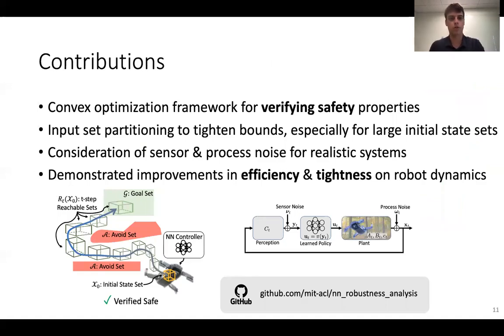So to wrap up, the contributions of this work are a new convex optimization-based framework using linear programming that allows you to verify the safety properties of neural network control systems. This is based on linear programming as well as using these new ideas from input set partitioning, which is really useful particularly when your initial state set is large. We also showed how you can consider sensor and process noise in the analysis, and we showed how this improves your efficiency and tightness on different problems in robot dynamics. I'd be excited to hear from anyone with questions, as well as I'd like to point you to our code. I'd be excited to hear if anyone tries it on new systems or a new neural network. Thank you.